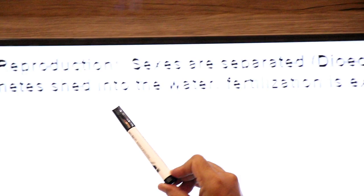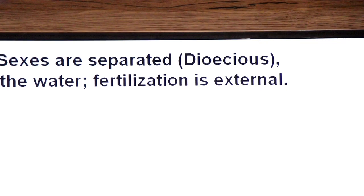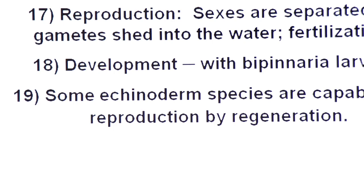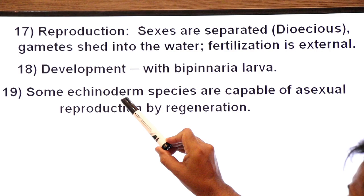Reproduction. Their reproduction, sexes are separated. Dioecious. Gametes are shed into the water where fertilization takes place. So their fertilization is external. Development with larvae known as bipinnaria larvae.